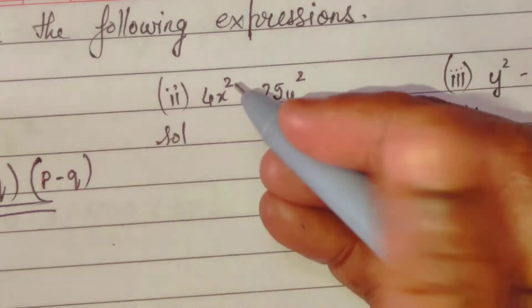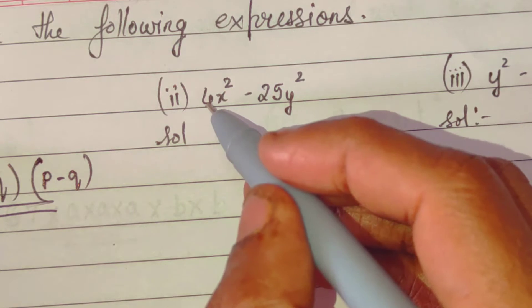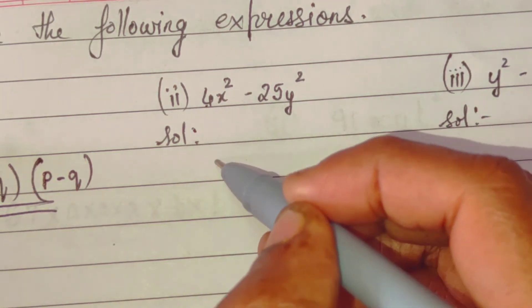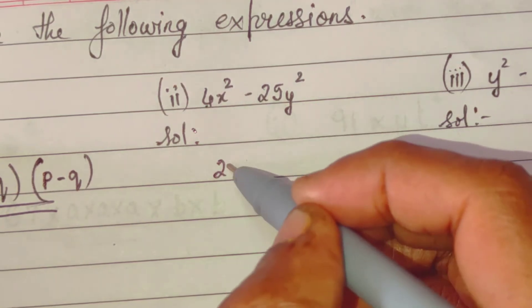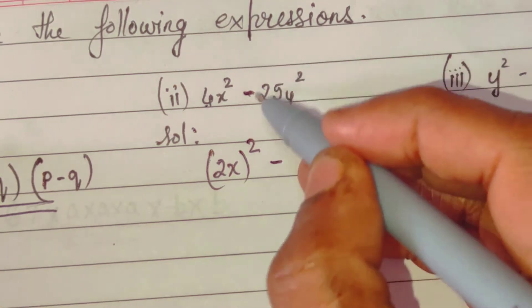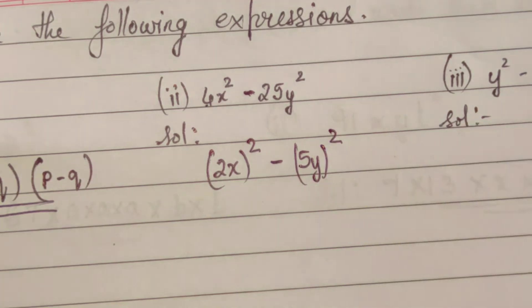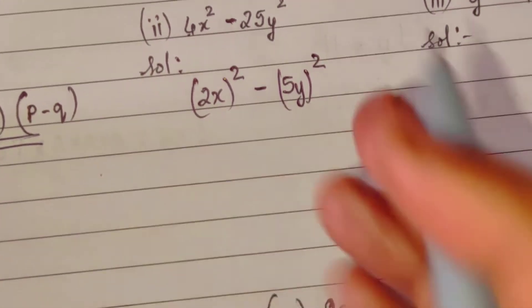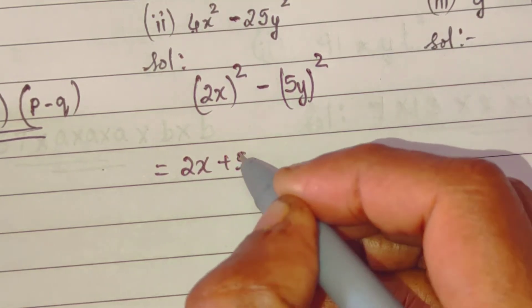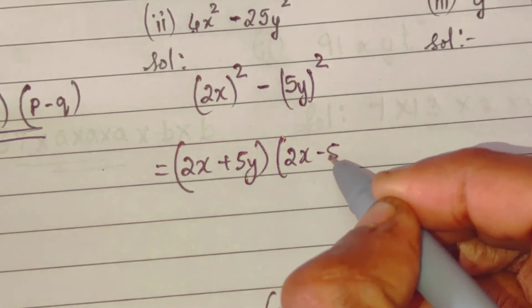Now see the second one. 4x square. 4 is a square of 2, so here it will be 2x the whole square. Minus 25 is square of 5, so 5y the whole square. The answer will be 2x plus 5y times 2x minus 5y.